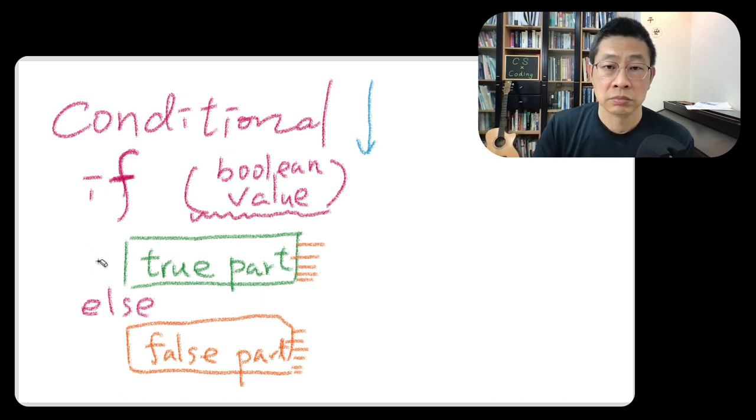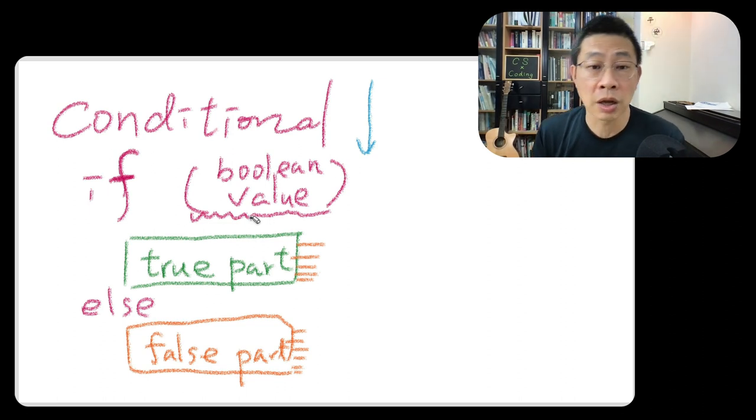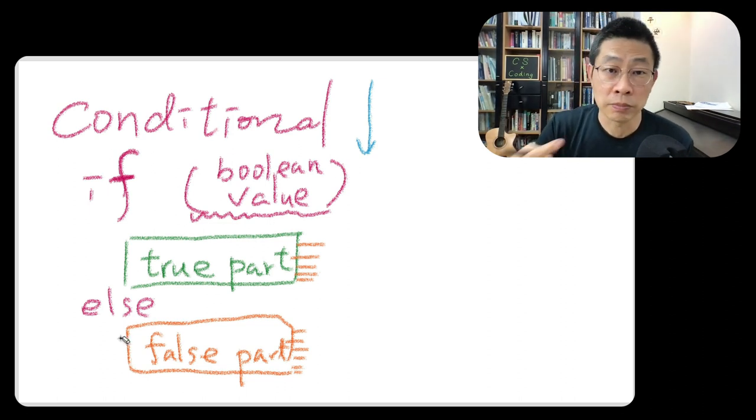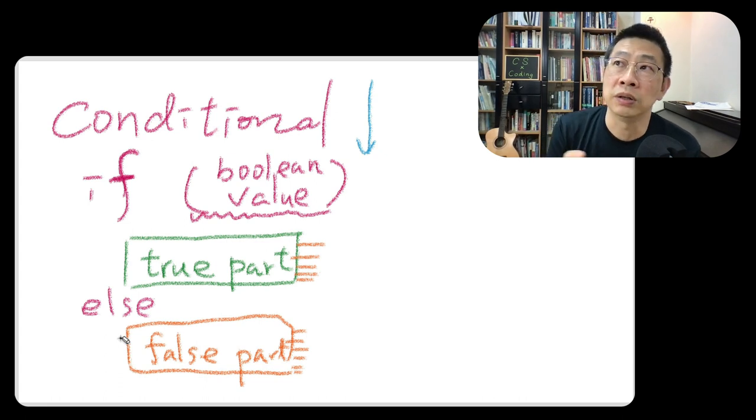But how do I know which one will be executed exactly? They'll determine this condition at runtime. And sometimes true, sometimes false. Yeah, let's make the program kind of dynamic, decide something, right? Let's, that's why program can have a kind of intelligence.